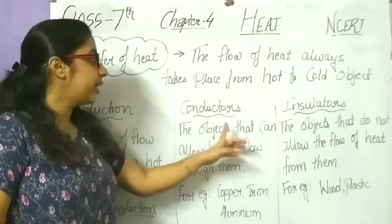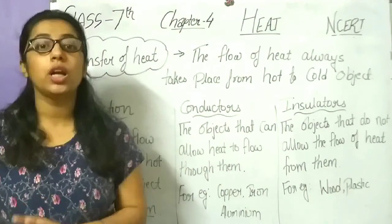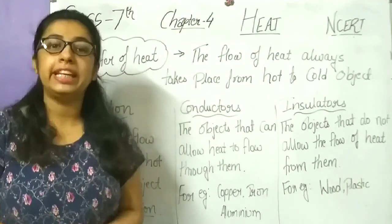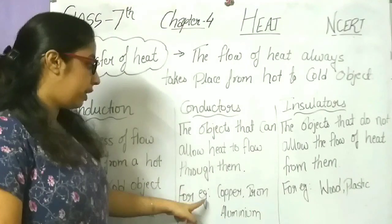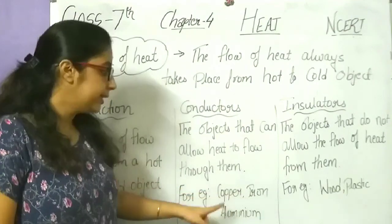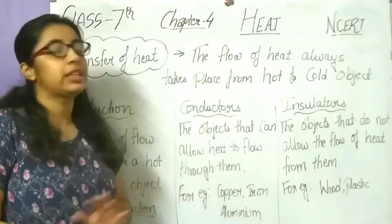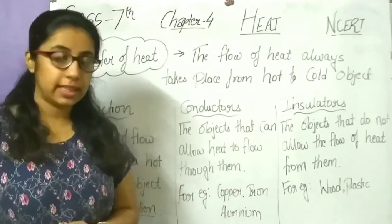Conductors. Some objects that can allow heat to flow through them are called conductors. Conductors are the ones that can easily transfer heat, for example copper, iron, aluminum. Your utensils are made of these, so that the heat will easily transfer.